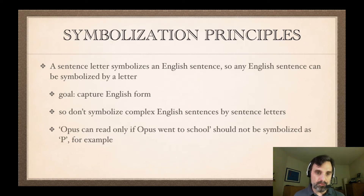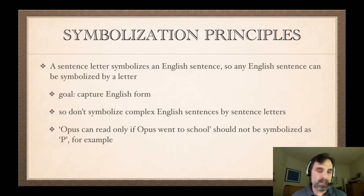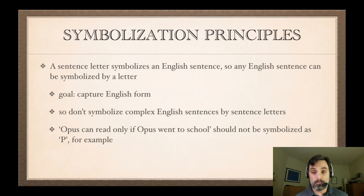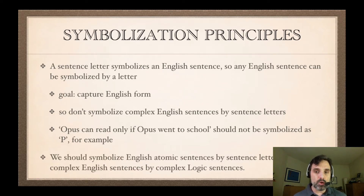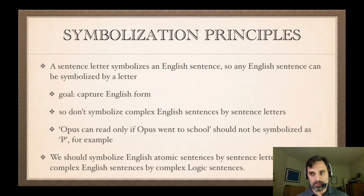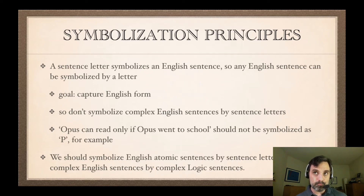So if we have 'Opus can read only if Opus went to school,' we should not symbolize that as P — that's a bad symbolization. We want to symbolize that as a conditional, as it is. English atomic sentences should be symbolized by sentence letters. An atomic sentence is a sentence that doesn't have any sentences as parts or constituents. For example, 'Opus can read' has the parts Opus, can, and read, but there are no sentences that are part of it — so that makes it an atomic sentence.